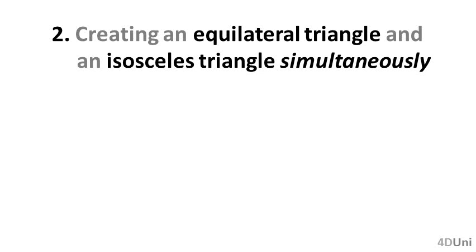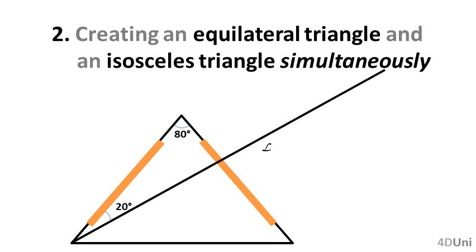In some problems, when we use auxiliary lines considering the input information, it is enough to create isosceles or equilateral triangles separately. But some problems require creating both simultaneously. This is not always possible, but when it is, there is high probability that it will help you solve the problem. For instance, given the isosceles triangle, the line L and the angles of 20 and 80 degrees as shown in the figure, what is the auxiliary line that we should use considering those two notes?